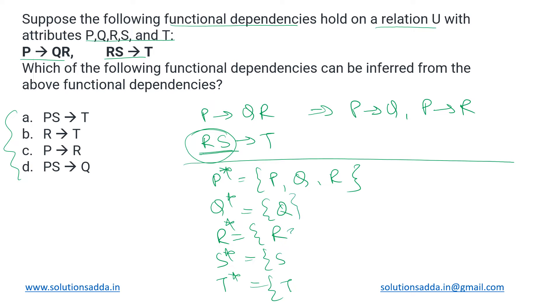So these are the closures which we have got. Now let us have a look at these options. First one is saying PS derives T. So let us take the intersection of closures of both P as well as S. If we combine both of them, so if there is PS on the left hand side, then we know that P can derive P, Q, and R.